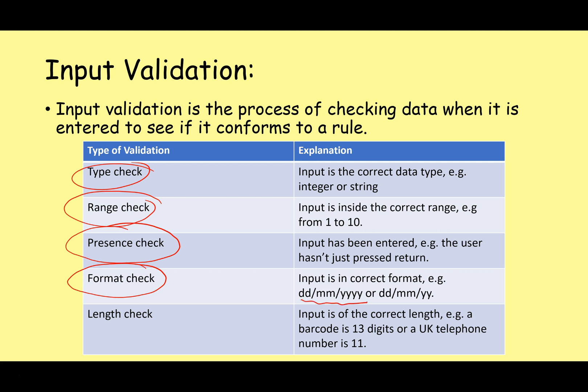For format checks, think about dates — there are lots of different ways you could enter a date: day/month/four-digit year, day/month/two-digit year, or the American system of month/day/year. All these things you need to think about and check before continuing with the program. A length check asks: is the input the correct length? Barcodes are typically 13 digits, a UK telephone number is typically 11 digits — so if you enter 9 or 20 digits, it's certainly going to be wrong and the program needs to ask the user to repeat it.